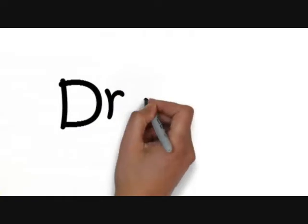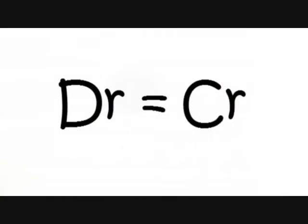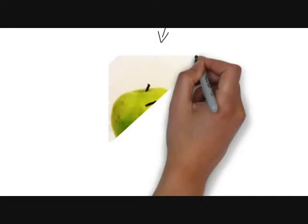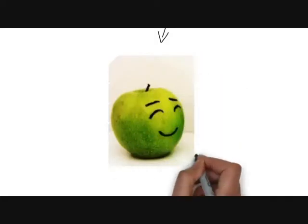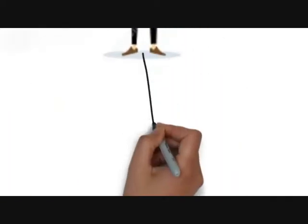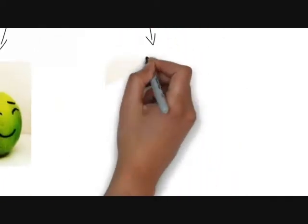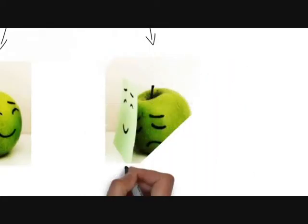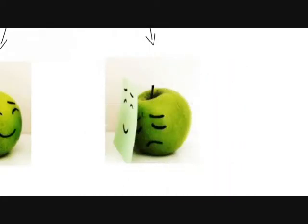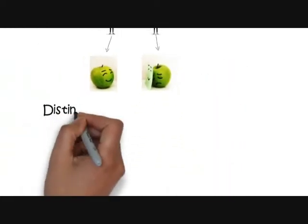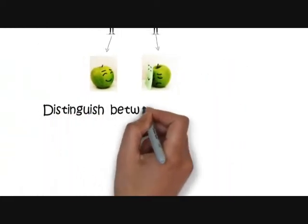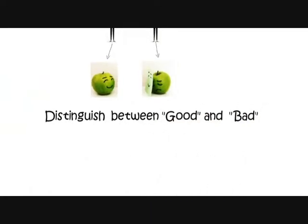If we cannot distinguish between good and bad securities, the result is that good securities become undervalued and firms will not issue them, while bad securities will be overvalued and issued far more.